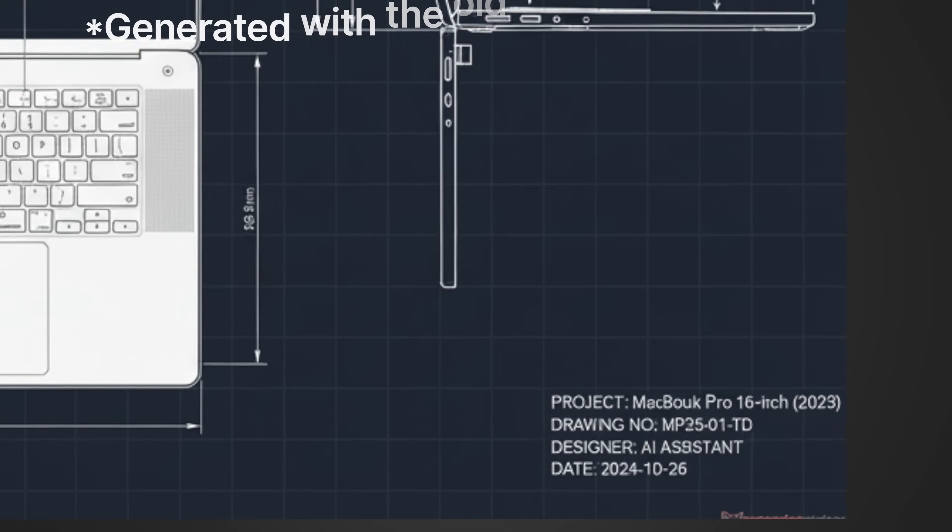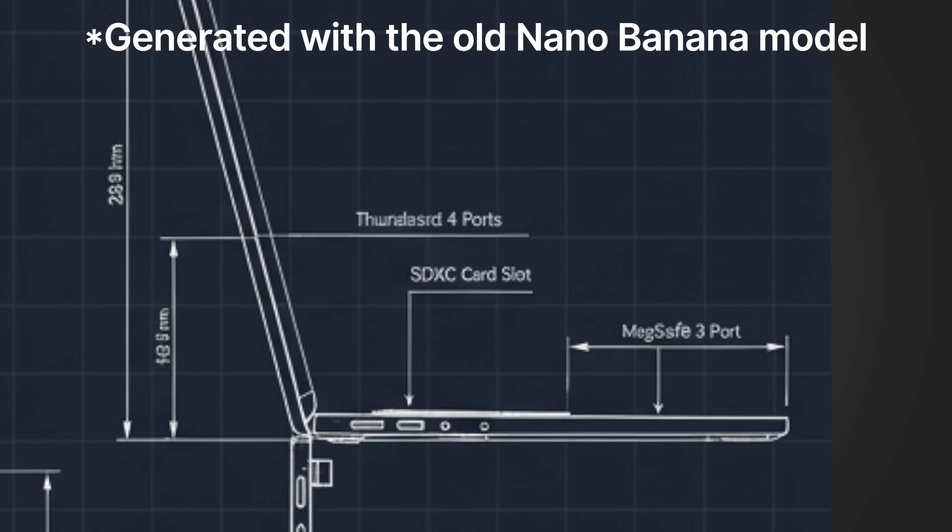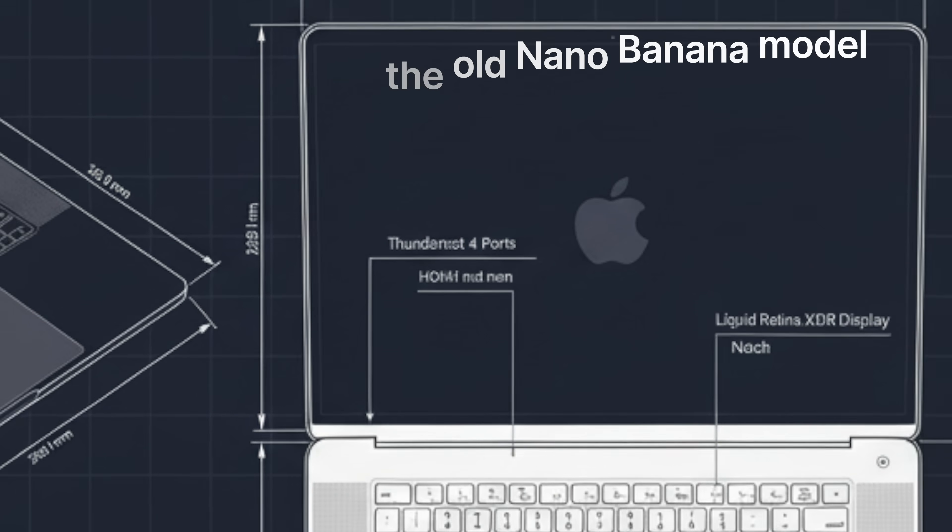As crazy as this real world understanding is, there's something else that blew my mind arguably even more: the text and accurate text rendering of Nano Banana Pro. AI models have always been terrible at text — misspelt words, melted letters, nonsense phrases, just pain up until now. Nano Banana Pro finally fixes that. It renders text exactly how you write it, and there are some cool use cases for this.